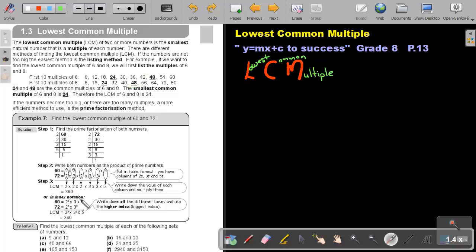If you want to do the index notation, you will write it in index notation. Write down the prime factors in index notation. And now this is very important: you write down all the different bases and you use the higher index. So you will write these twos, these threes, these fives. And I look for the biggest index. So it's not two, but it's three. It's not one, but it's two. And I'm just listing that. And then I just multiply everything together and I will come to an answer of 360.